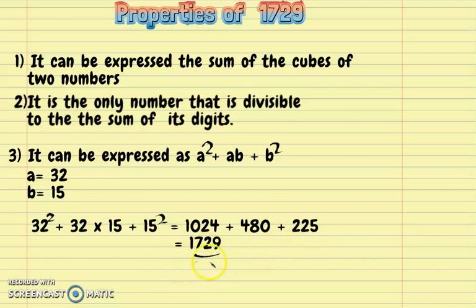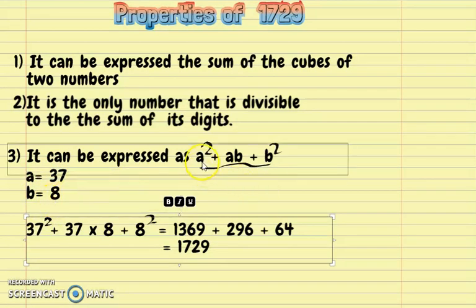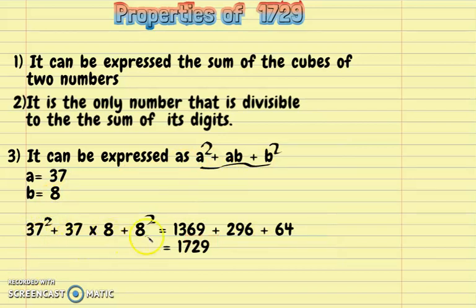The third way in which a² + ab + b² can be expressed: if a = 37 and b = 8, replacing these values in the formula gives us 37² + 37×8 + 8², which equals 1369 + 296 + 64 = 1729.